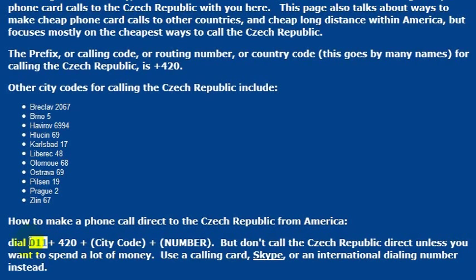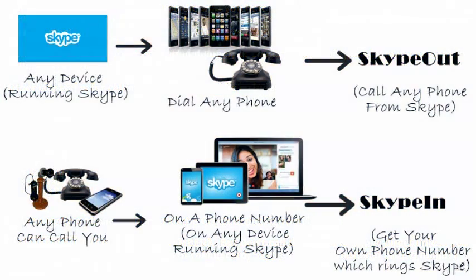Your cell phone can be enabled to do this as well, but you would need to dial 011 and then 420. 420 is the country code for Czech, so you would just dial 011 then 420 and that would get you to Czech, and then you dial the phone number after that.